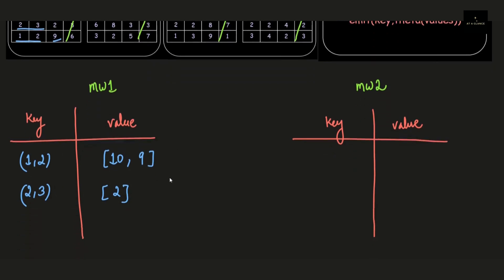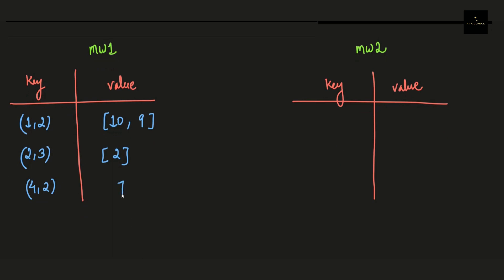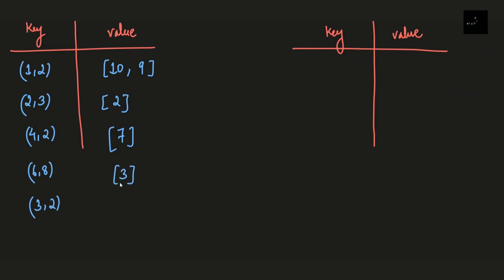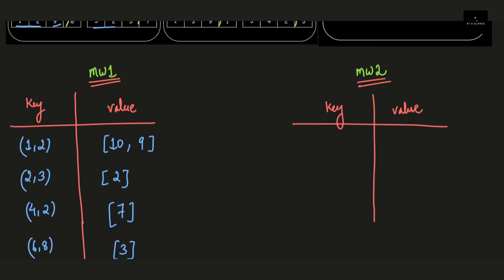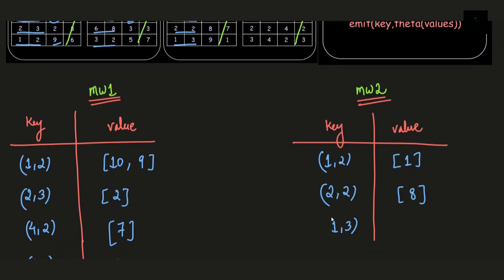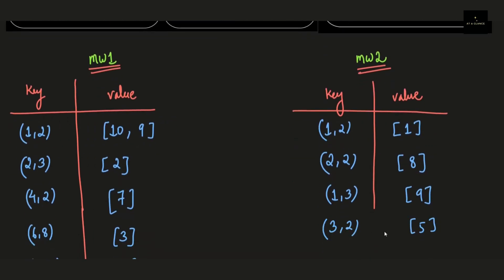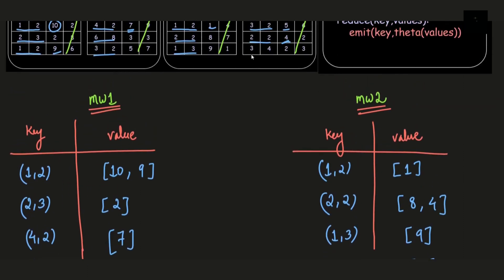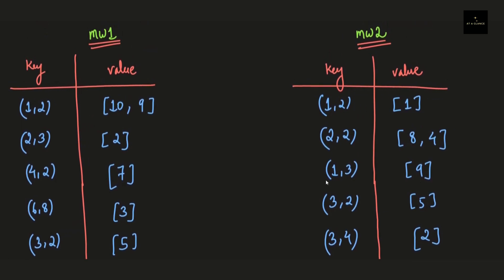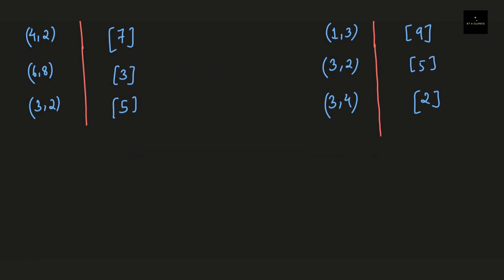Looking at the next table under map worker 1, we have the record 4, 2, and 7 — so 4, 2 comes under the key section and 7 under the value section. We do the same for the remaining records. Now we're done with map worker 1. For map worker 2 we perform the same operation — whenever a duplicated key is found, just append the new value to the previous value list for that key. For key 2, 2 we end up with two elements in the value list: 8 and 4.